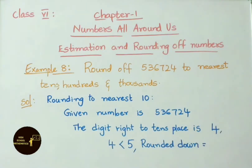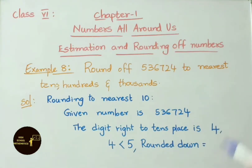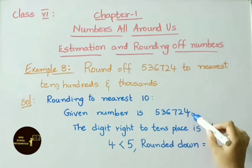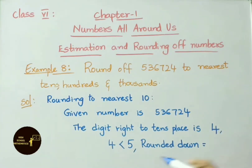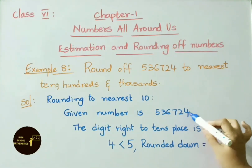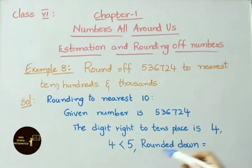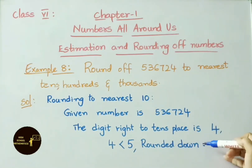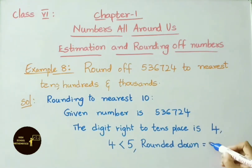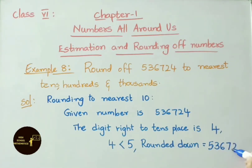Rounding to nearest 10. Given number is 5,36,724. Look at the digit to the right of the 10s place — that is 4. Now we check this 4: it is less than 5. If the digit to the right of the 10s place is less than 5, we round it down. That means remove the 4 and place 0. So our answer is 5,36,720.